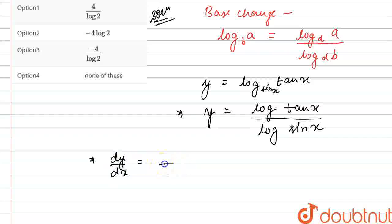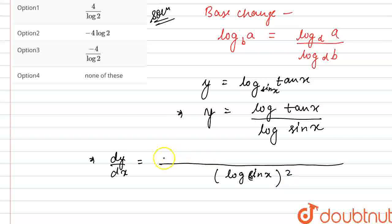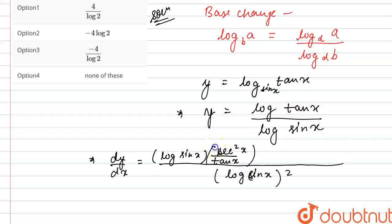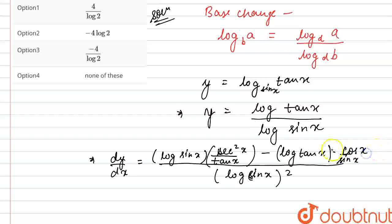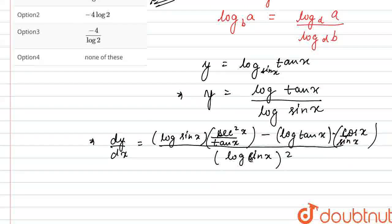So dy/dx equals, in the denominator, log of sine x squared, and in the numerator: log of sine x times the differentiation of log 10x, which is 1 upon 10x, then using the chain rule, differentiation of 10x gives secant squared x, minus log of 10x times 1 upon sine x times cos x.